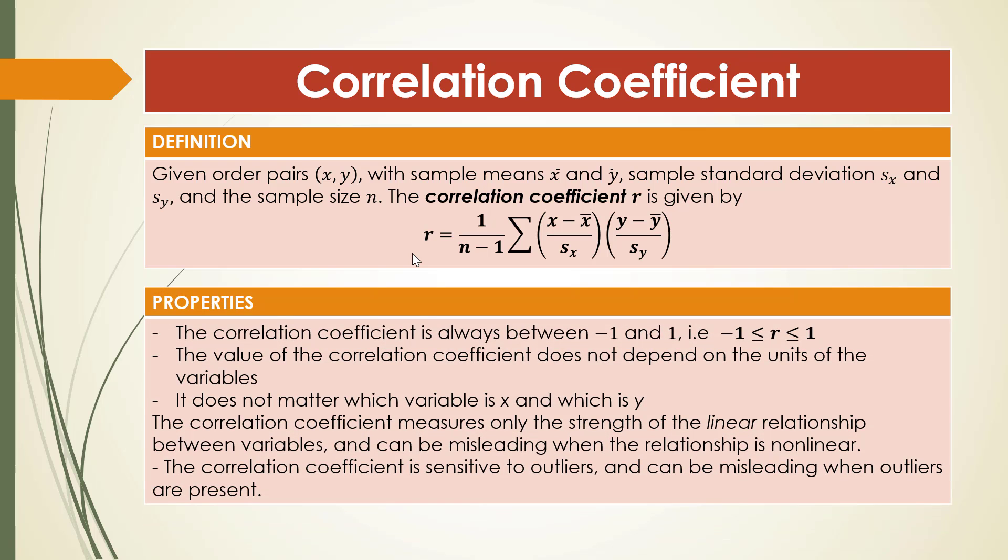The correlation coefficient has several properties. First, it is always between negative 1 and 1, so −1 ≤ r ≤ 1. Second, the value does not depend on the units of the variables, and it does not matter which variable is called x and which is y. Third, the correlation coefficient measures only the strength of the linear relationship and can be misleading when the relationship is nonlinear. Fourth, it is sensitive to outliers and can be misleading when outliers are present.